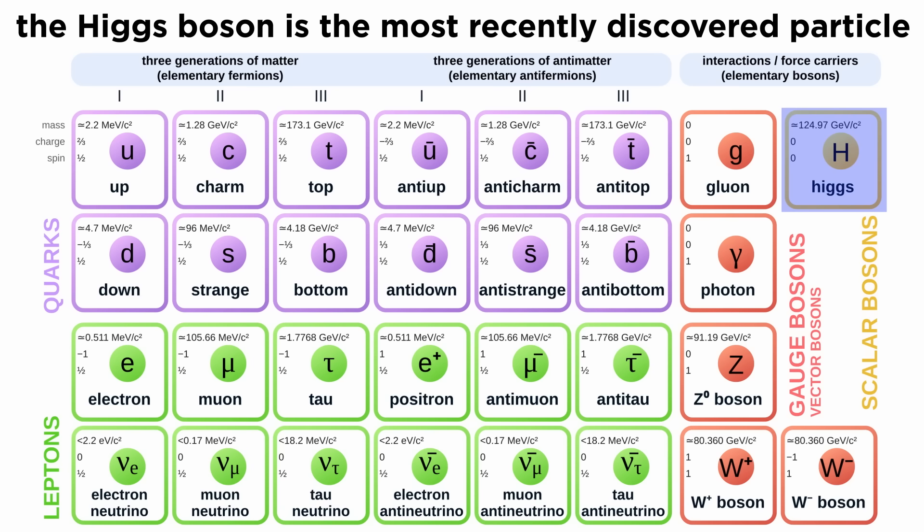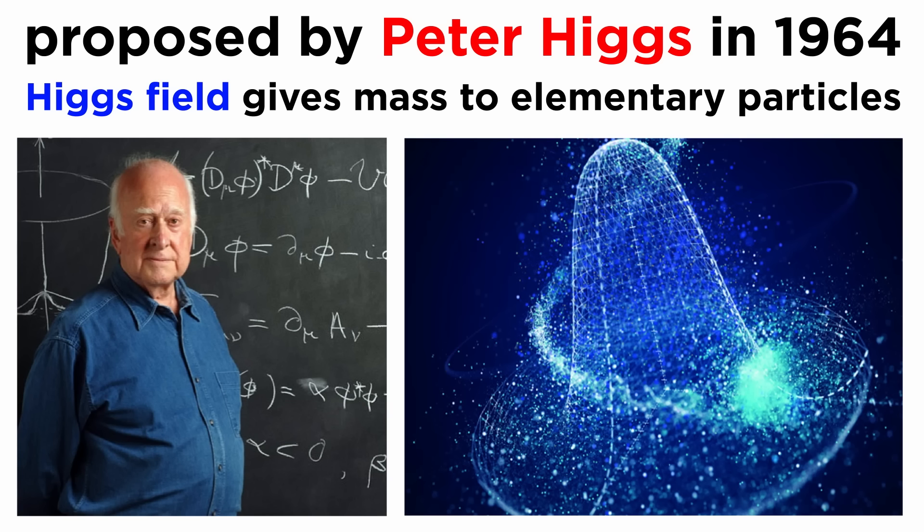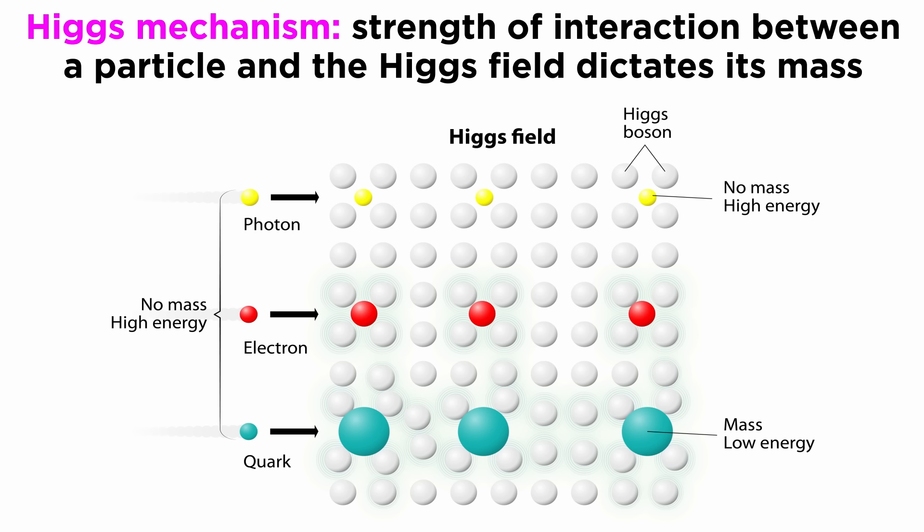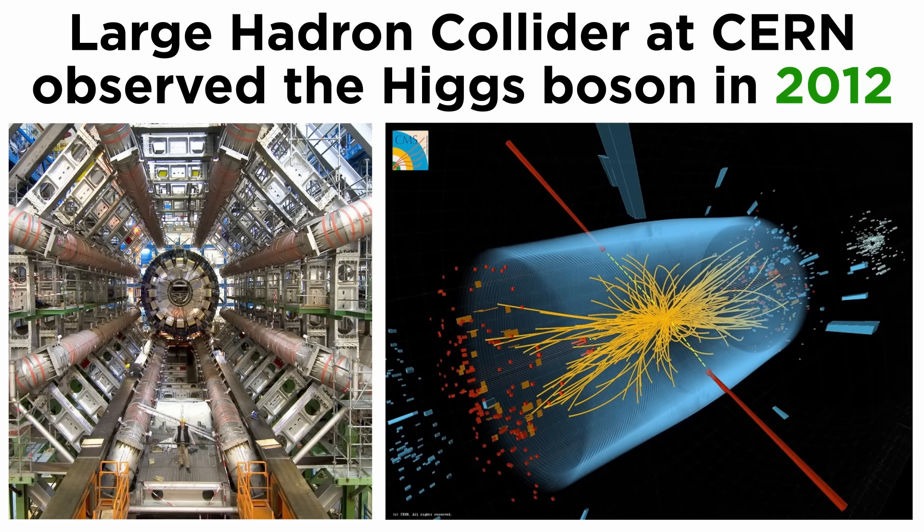In fact, the final boson is also the most recently discovered particle in the standard model. The Higgs was proposed in 1964 by Peter Higgs as a field that filled the universe and gave mass to elementary particles. The Higgs boson would be the corresponding particle for this field, similar to the photon being the corresponding particle for an electromagnetic field. The strength of interaction between a particle and this field would dictate how much mass the particle ended up with, and the particle would gain this mass through something called the Higgs mechanism.